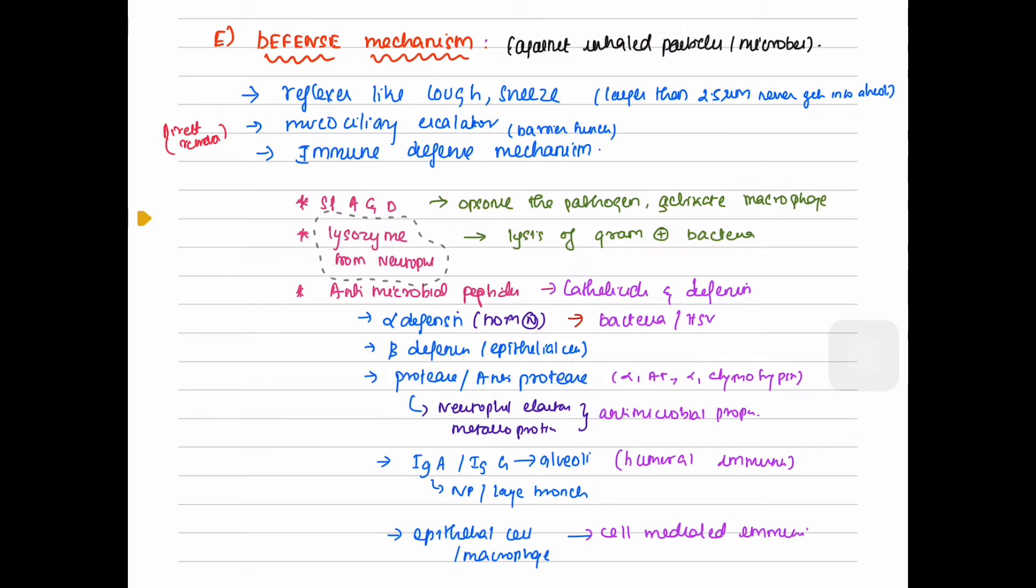The lung produces antimicrobial peptides like cathelicidins and defensins. The alpha defensins are produced from neutrophils and play an important role in bacterial infections and herpes simplex virus infection. The epithelial cells produce beta defensins.